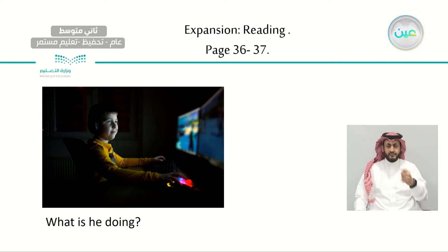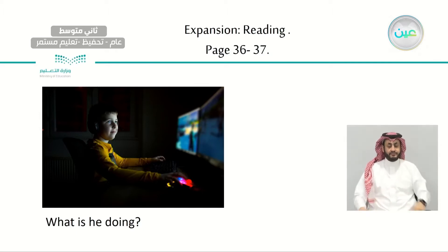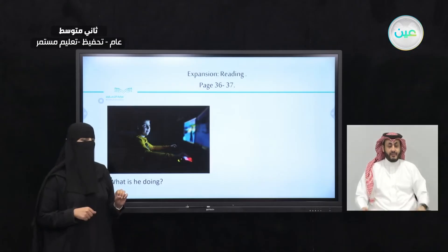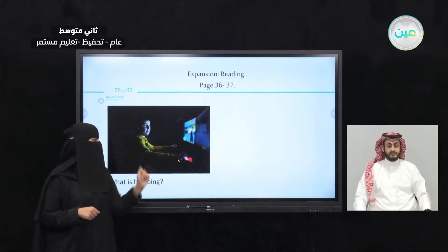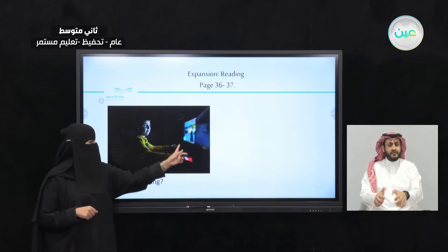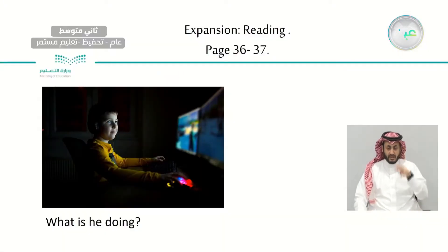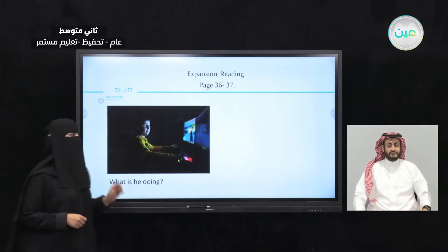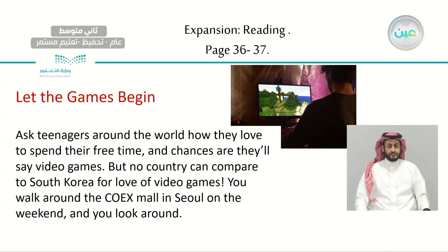What is the boy doing here? What are the tools and things around the boy? The boy looks like he's having fun and he's playing a video game or online game. He's using his computer, the mouse, the keyboard, the monitor, and the boy has got headphones over his head. So it looks like he's playing an online game or a video game. Can you guess what the text is going to be about?